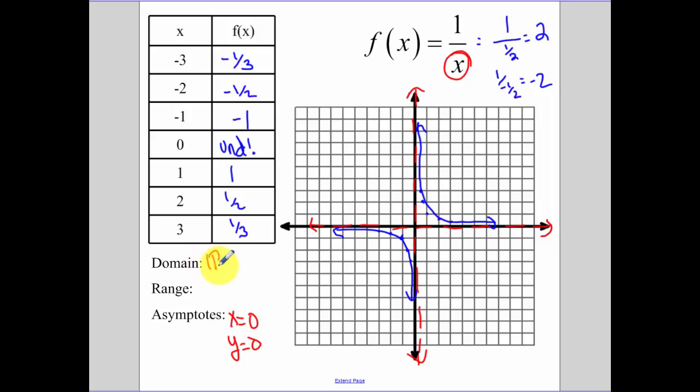Our domain, all real numbers except I cannot plug in 0. Our range, all real numbers except y cannot be equal to 0. If you notice, our domain and range restrictions are what our asymptotes are. And that's a key thing that you guys need to understand.